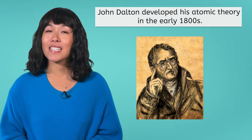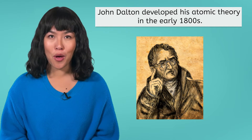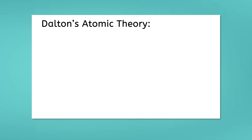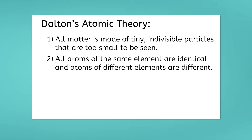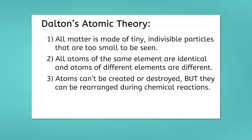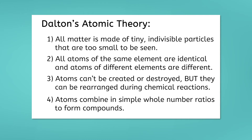The next major moment in the timeline of atomic theory wasn't for over 2,000 years. In the early 1800s, a scientist named John Dalton developed his atomic theory. Building on Democritus' ideas, Dalton proposed four key points: 1. All matter is made of tiny, indivisible particles that are too small to be seen. 2. All atoms of the same element are identical, and atoms of different elements are different. 3. Atoms can't be created or destroyed, but they can be rearranged during chemical reactions. And 4. Atoms combine in simple whole number ratios to form compounds.